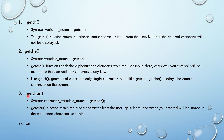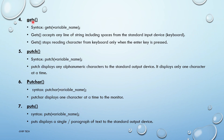Next is getchar. The syntax of getchar is: character_variable_name = getchar(). Getchar reads a character from user input, and the character entered is stored in the mentioned character variable. Then gets — it is used for strings. The syntax is: gets(variable_name). Gets accepts any line of string including spaces from the standard input device, and stops reading only when the Enter key is pressed.